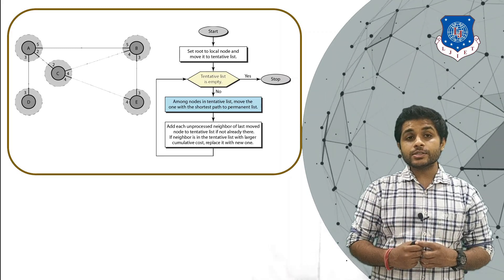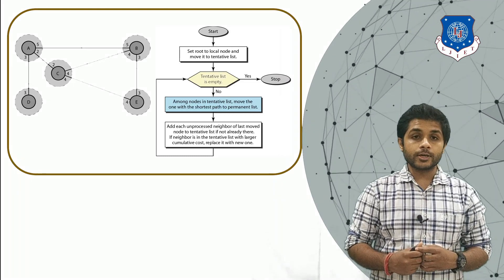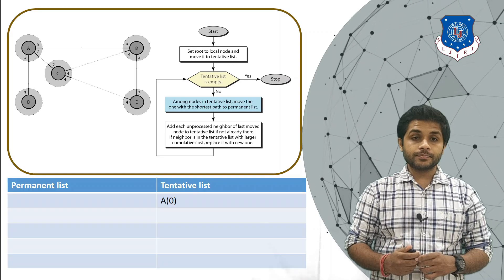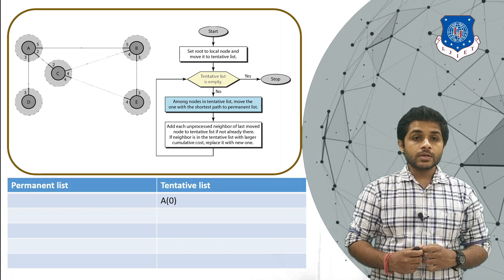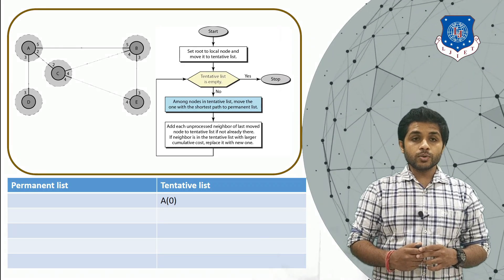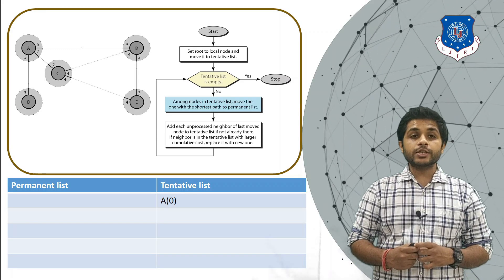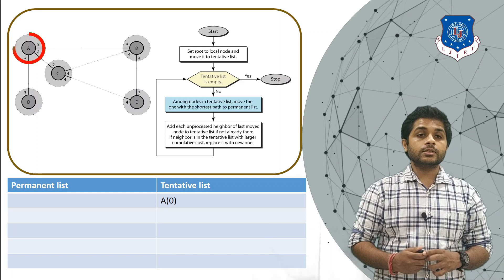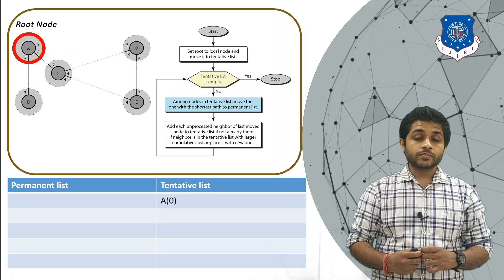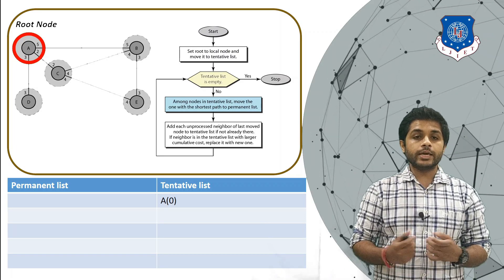Right now we are only interested in device A, so we will create the shortest path tree for router A only. All routers in the network are divided into two categories: the tentative list and the permanent list. In Dijkstra's algorithm, the first step is to move the root node into the tentative list. The root node is the first node in the shortest path tree — since we want the tree with respect to router A, the root node is device A. The value in the bracket shows the distance from device A, so the distance from itself is 0, hence A(0) is written in the tentative list.